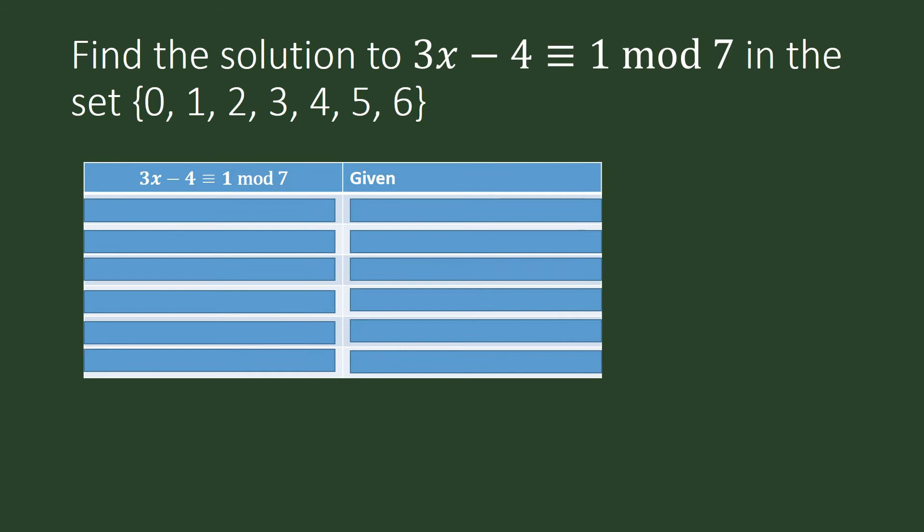Find the solution to 3x minus 4 is congruent to 1 modulo 7 in the set {0, 1, 2, 3, 4, 5, 6}. Which among these integers is a solution to our congruence equation?